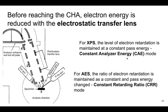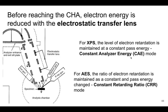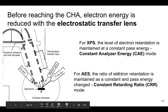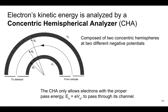For XPS, this is called constant analyzer energy mode, or CAE — maintaining the same level of retardation at a consistent pass energy. For AES, the ratio of electron retardation is maintained as a constant while the pass energy changes; this is known as constant retarding ratio, or CRR. These are the two different modes for the transfer lenses used with the hemispherical analyzer for XPS and AES respectively.